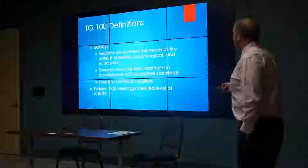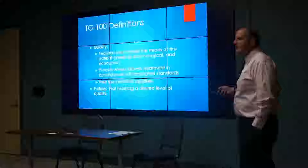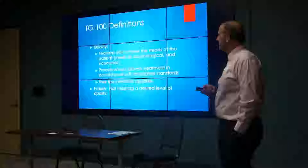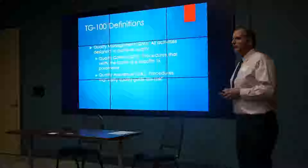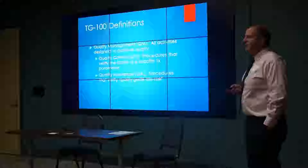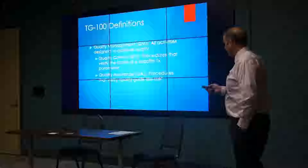Some definitions in TG-100: quality is defined as features which meet the needs of the patient—medical, psychological, or economic—and a process which delivers treatment in accordance with national or internationally accepted standards, free from errors or mistakes. Failure is defined as not meeting some desired level of quality. Quality management program is defined as all activities designed to achieve some level of quality. There are two components: quality control, which verifies the status of a specific treatment parameter, and quality assurance, which verifies the entire process and that quality goals are being met.